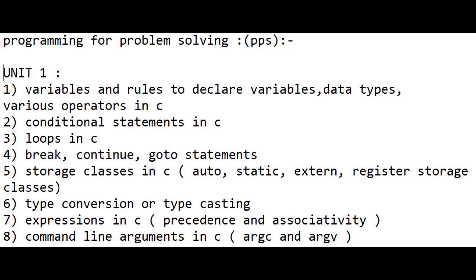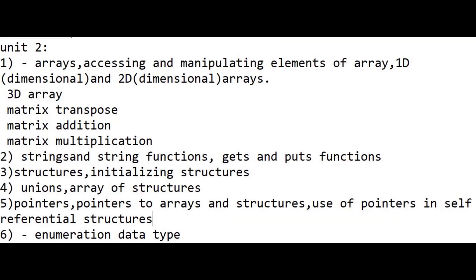Fourth question is break, continue, and goto statement. Fifth question is storage classes in C. Sixth question is type conversion. Seventh question is expressions in C — along with expressions, you need to learn what is precedence and associativity. Eighth question is command line arguments. These are the important questions in unit one.